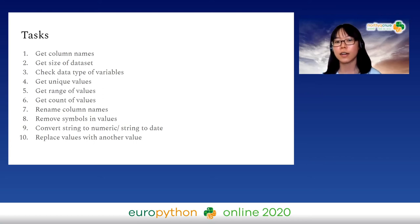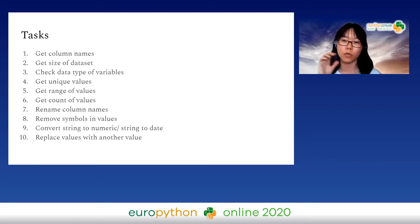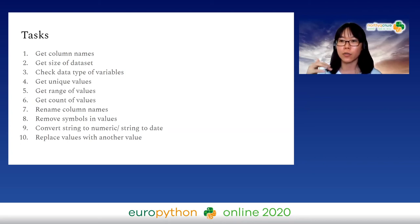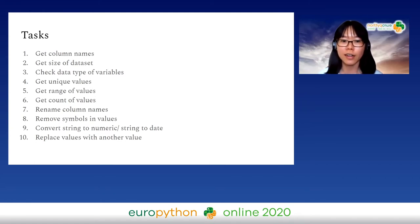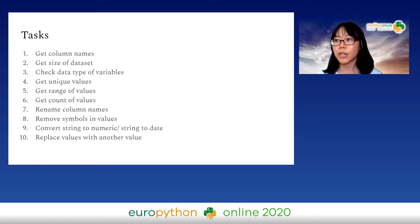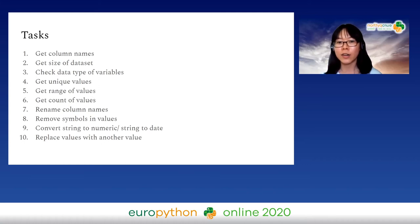Subsequently, we get the count of values by different groups or levels — this is more related to data understanding rather than just univariate unique values. Then in certain cases, we want to rename columns before doing any merging or appending, which is why I included that as a tip as well.